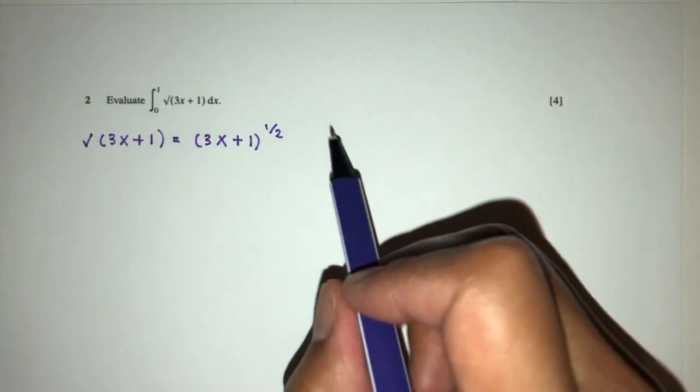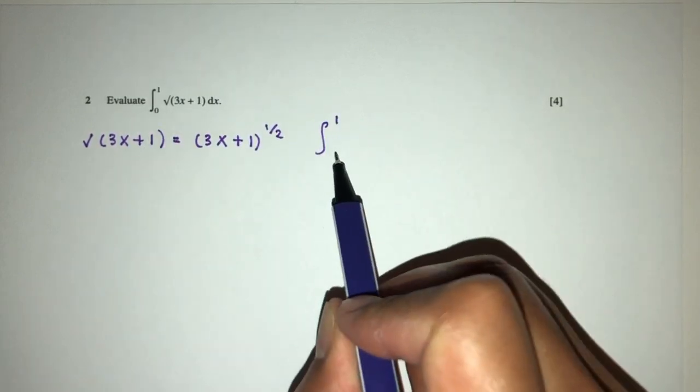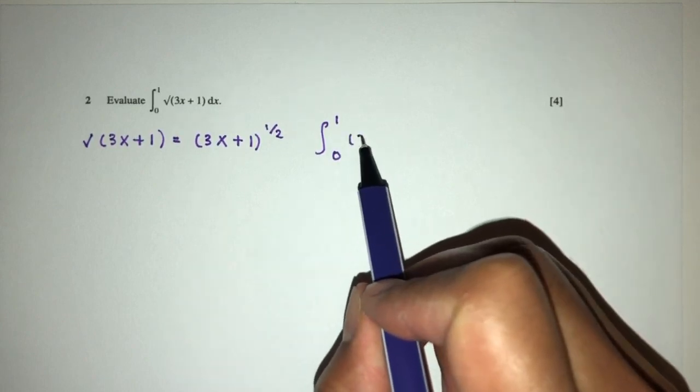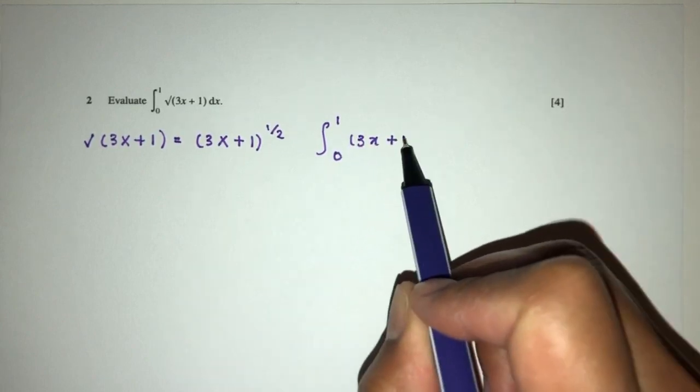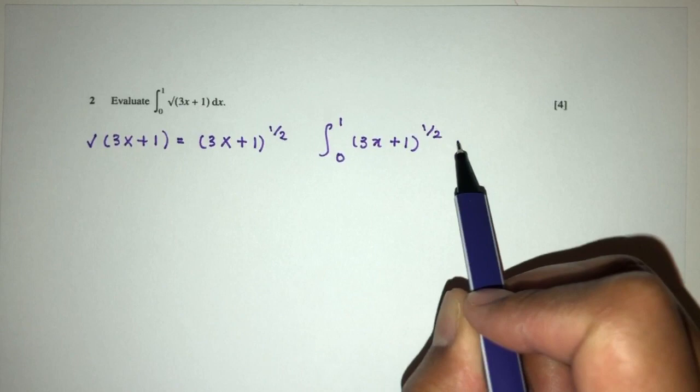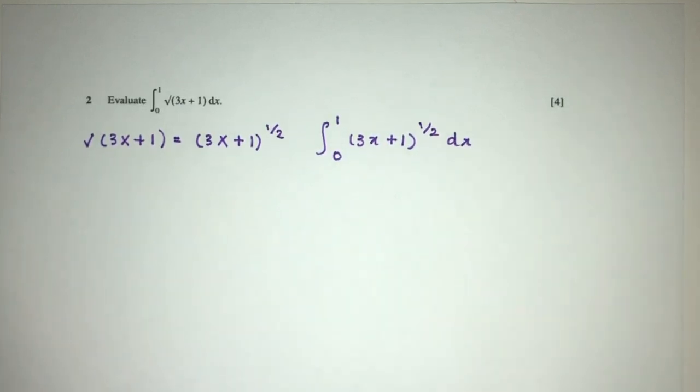Right, now from this you will have what? Integration of 1, 0. You will have 3x plus 1 power half with respect to dx.